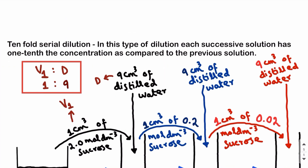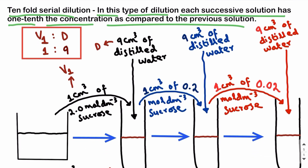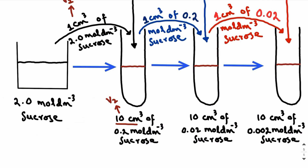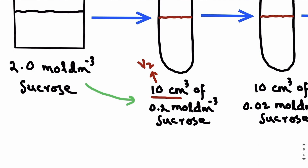Now let's move on to tenfold serial dilution. In this type, each successive solution has one-tenth the concentration as compared to the previous solution. For this you use a v1:d ratio of 1:9. Starting with a stock solution of 2.0 mole per dm³ sucrose, in the first step you reduce the concentration by 10 times, giving 0.2 mole per dm³.